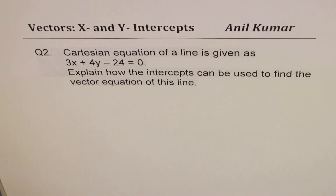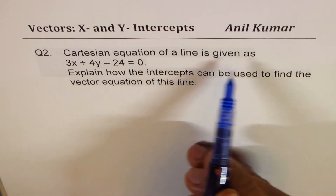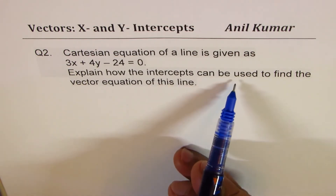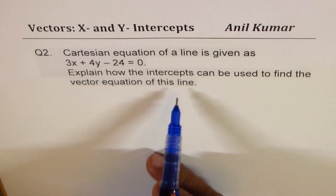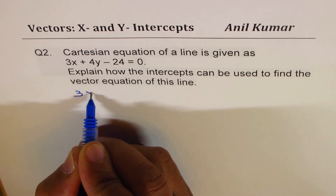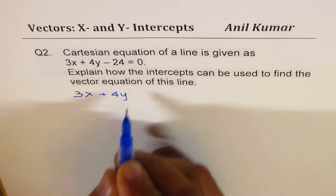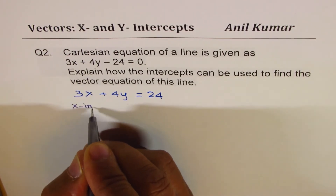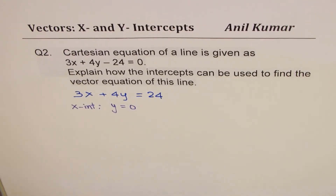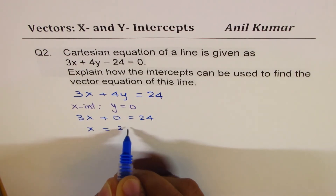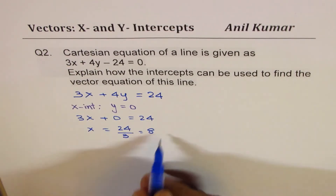Here is another good example on using x and y-intercepts. Question number 2: the Cartesian equation of a line is given as 3x plus 4y minus 24 equals to 0. Explain how the intercepts can be used to find the vector equation of this line. Rearranging: 3x plus 4y equals 24. For the x-intercept, substitute y equals 0: 3x equals 24, so x equals 8.